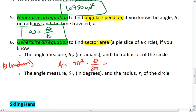This equation reduces. Our π's cancel, leaving us with θr² over 2. So the area of a sector is θr²/2. But this is only if θ is in radians.